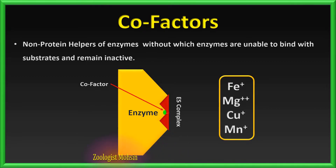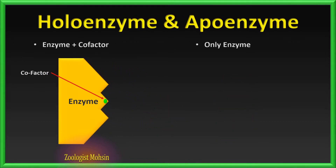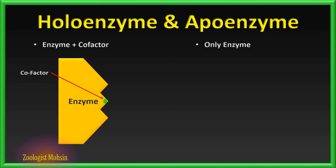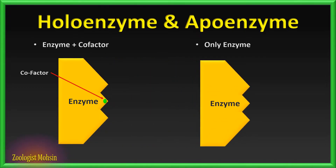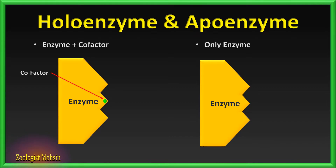Cofactors have conformational help in binding the enzyme active site to a particular substrate. Now it's easy to understand the terms holoenzyme and apoenzyme. Enzymes bound with cofactors are called holoenzymes — they are considered the active state of the enzyme. While enzymes without cofactors alone are called apoenzymes. Apoenzymes are inactive and cannot take part in chemical reactions.